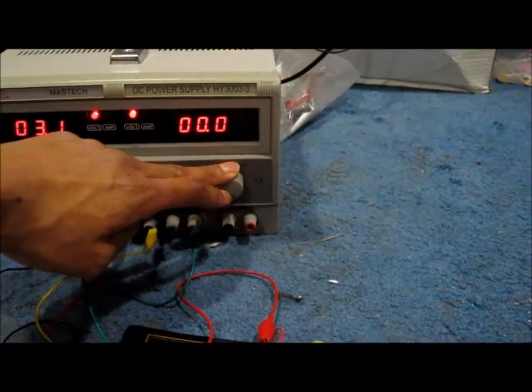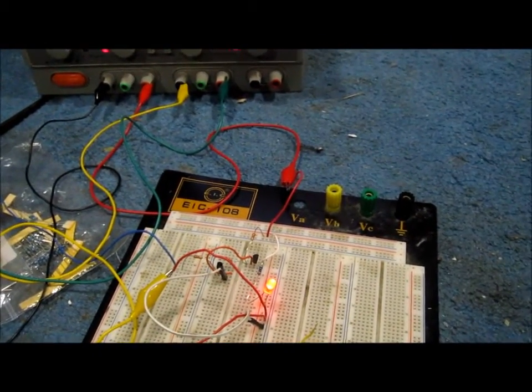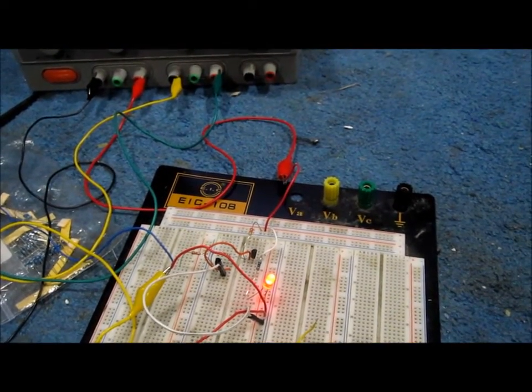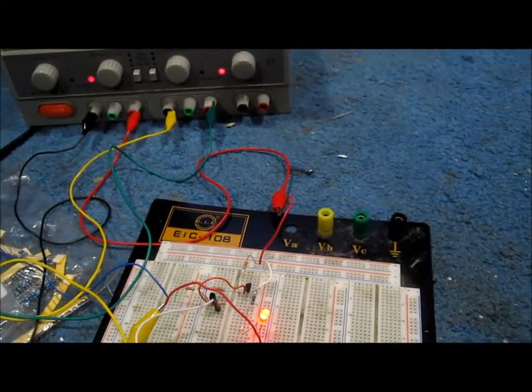You can see that the LED is still on even though there's now no input voltage to the base of the BC 547. This is how a latch circuit operates.